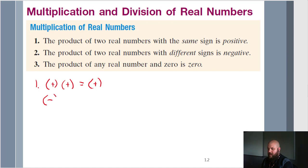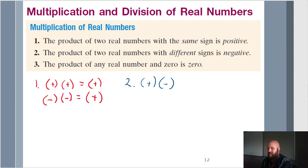Same thing: a negative value times a negative value gives you a positive number. Rule 2: the product of two real numbers with different signs is negative. So if you have a positive times a negative, you're going to get a negative answer. It doesn't matter the order — negative times positive still gives you a negative value.